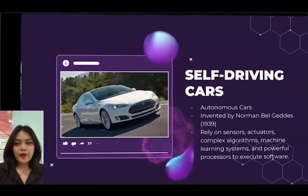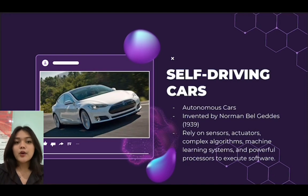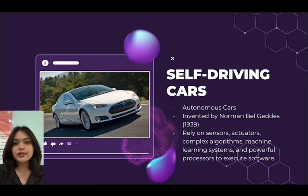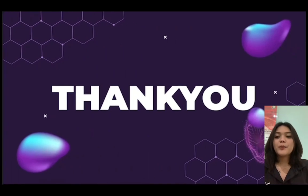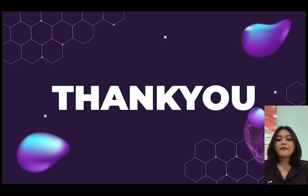The third example is self-driving cars. The autonomous car was invented by Norman Bel Geddes in 1939 and relies on sensors, actuators, complex algorithms, machine learning systems, and powerful processors to execute the software. This will be the end of our presentation on artificial intelligence. Thank you for watching — don't forget to share and like our video, and we hope our presentation is beneficial and clear enough to understand.